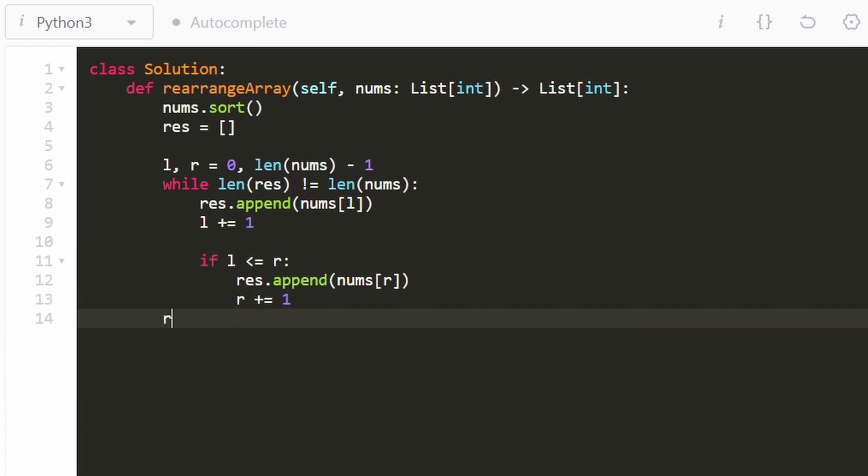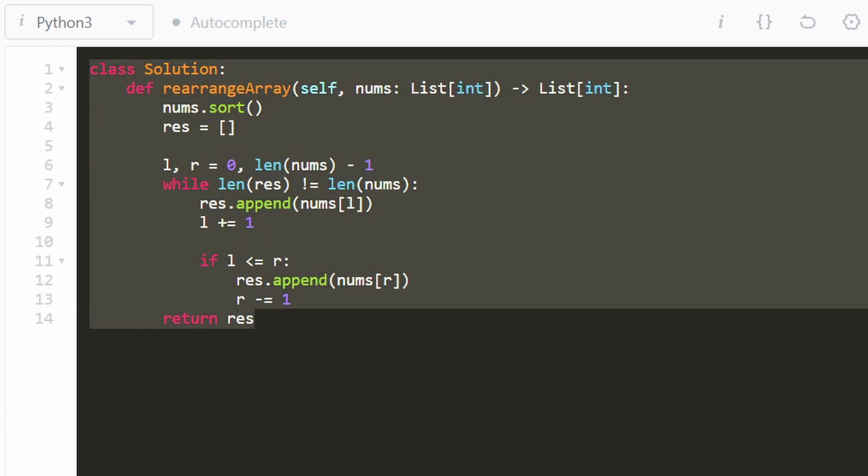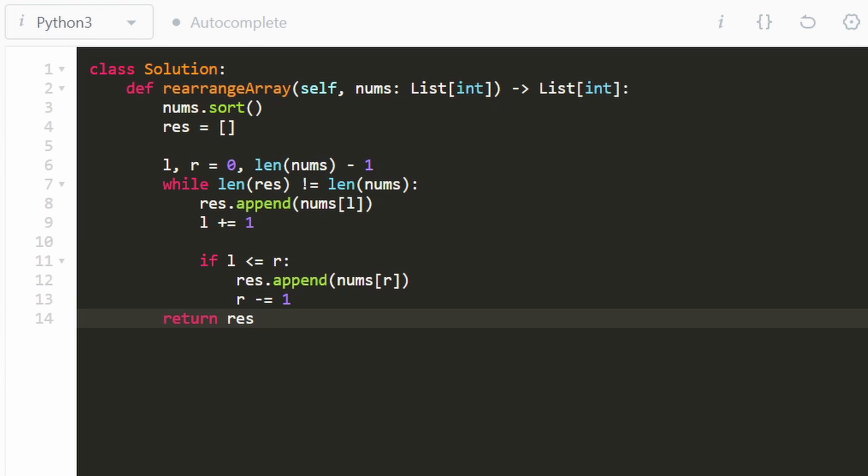And actually, since this is our right pointer, we don't want to increment it, we want to decrement it so that we can shift it to the other side. So sorry about that bug. But as you can see, this is the entire code. And yes, the solution does work. I hope that this was helpful. If it was, please like and subscribe. It supports the channel a lot. And I'll hopefully see you pretty soon.